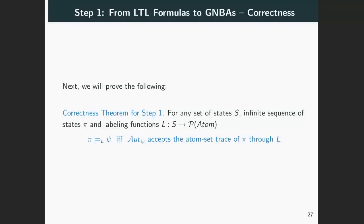So far, we constructed the automaton Aut_ψ associated to a formula ψ. Now we move to discuss the correctness of this construction, namely show that it satisfies the desired property mentioned before, that the language accepted by this automaton corresponds to the traces that satisfy the formula. More precisely, for any set of states S, labeling function L, and infinite sequence of states π, we have that π satisfies ψ if and only if Aut_ψ accepts its corresponding atom-set trace.